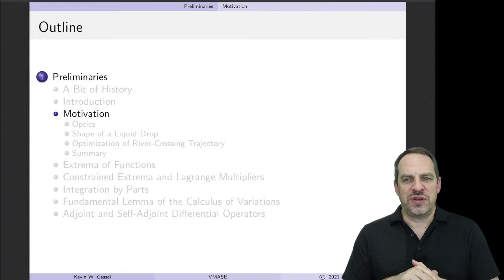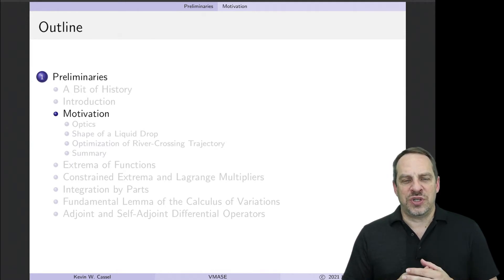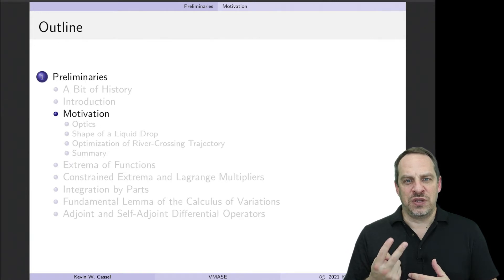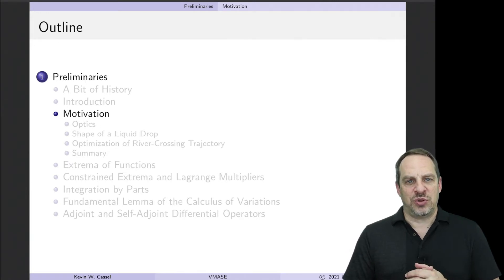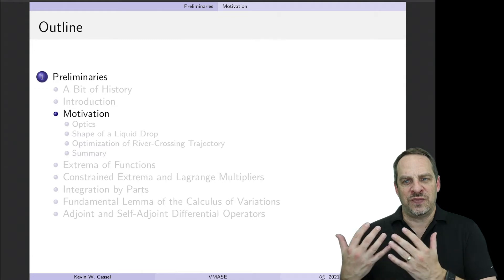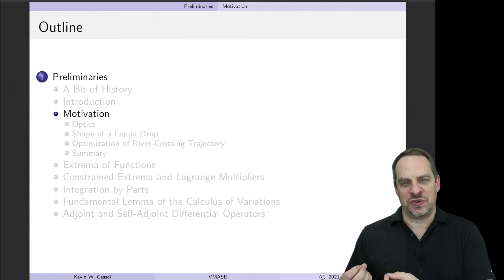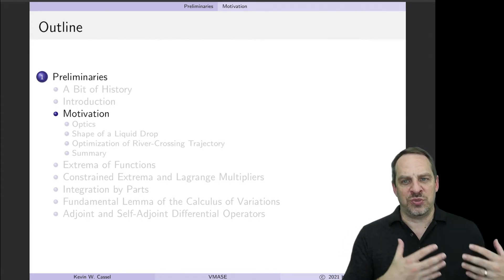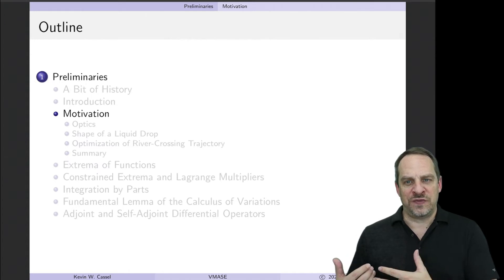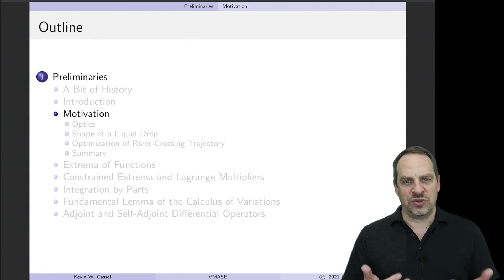For many of you scientists and engineers, you may not have been exposed to variational methods in your previous courses. What I want to do in the next three videos is go through three examples. Two of them are physically motivated, and one is an optimization problem. I want to show you that if you take the problem in its most basic form from a first principles perspective, and turn that into the most natural mathematical expression of that physical or optimization principle, it ends up being a variational method — a calculus of variations problem.